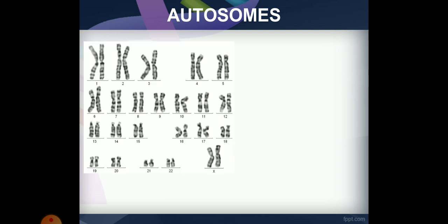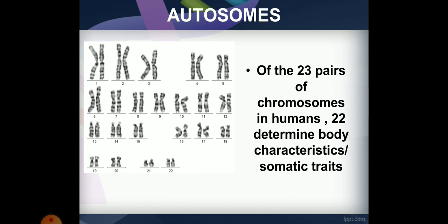This introduces another term: autosomes. There are 23 pairs of chromosomes, of which 22 pairs are autosomes. Autosomes are responsible for somatic or body characters.